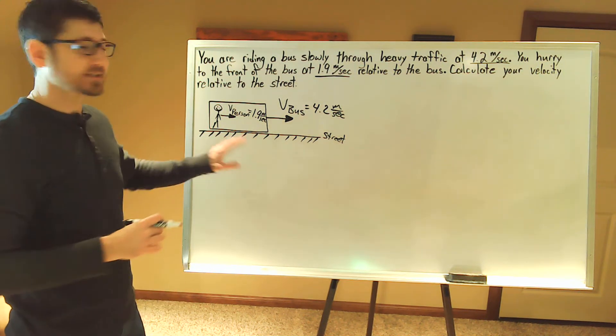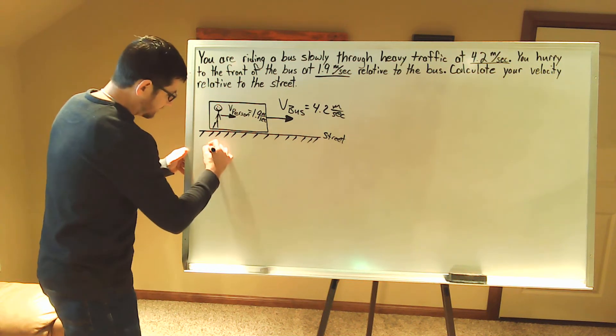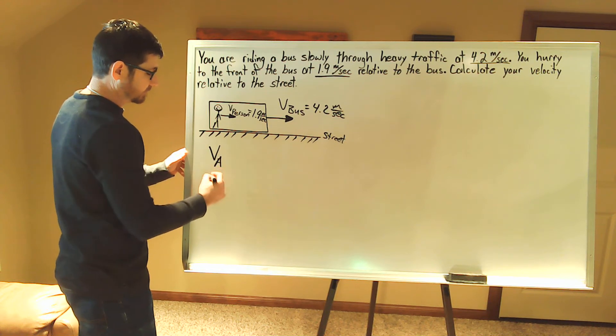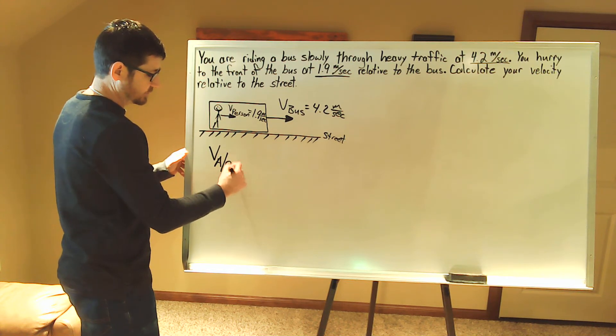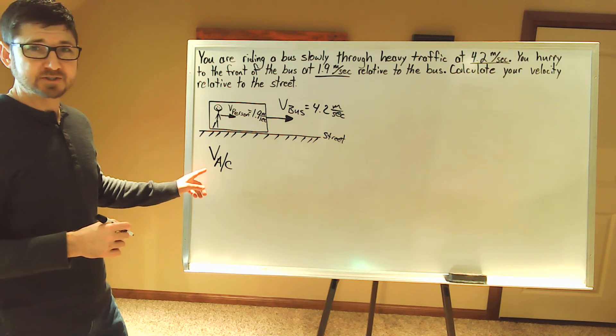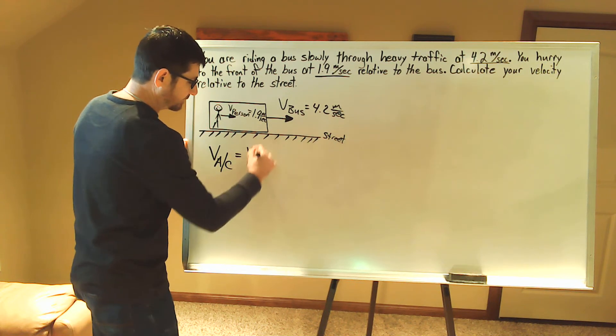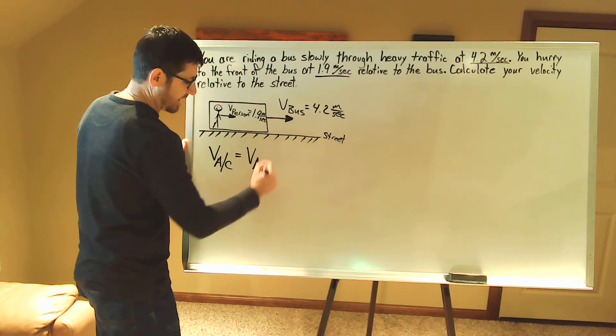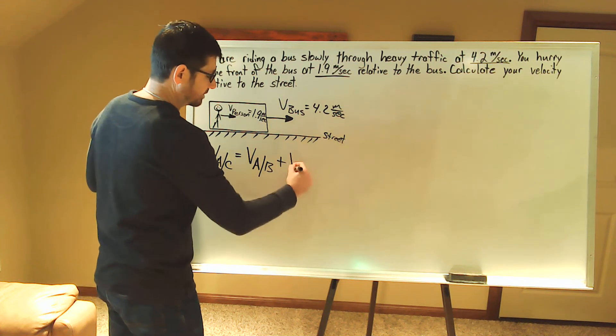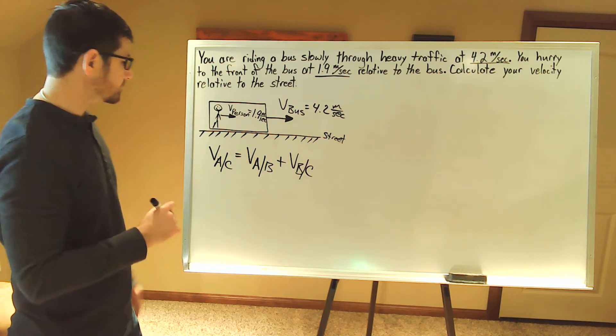Now, the next thing we want to do is write down our base equation. So for relative velocity, the base equation is the velocity of object A with respect to object C, or we could say the velocity of object A relative to object C, is equal to the velocity of object A relative to object B plus the velocity of object B relative to object C.